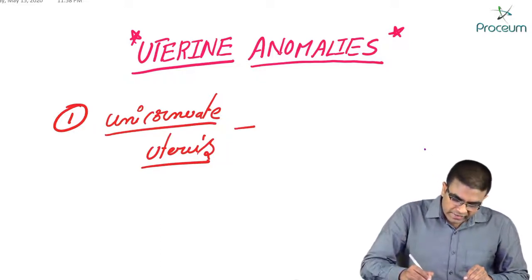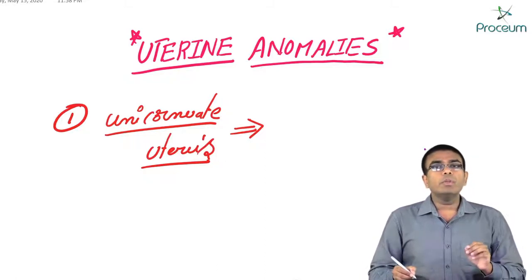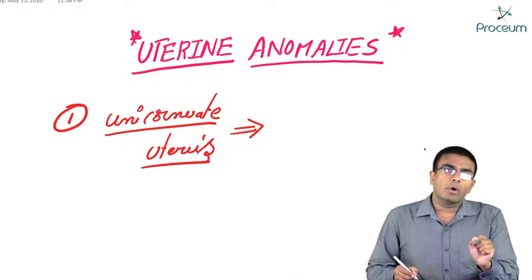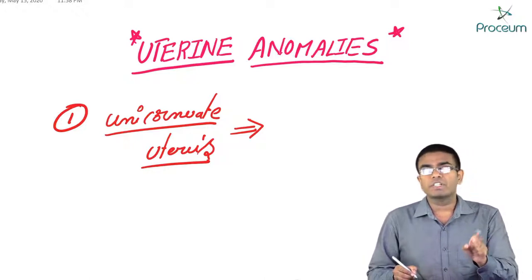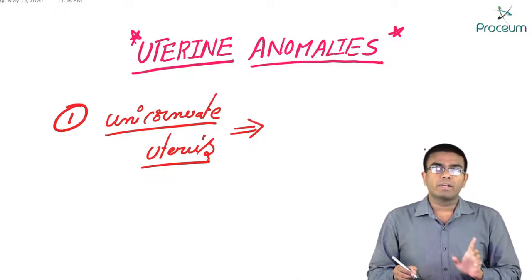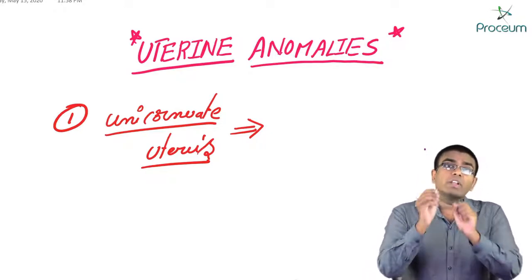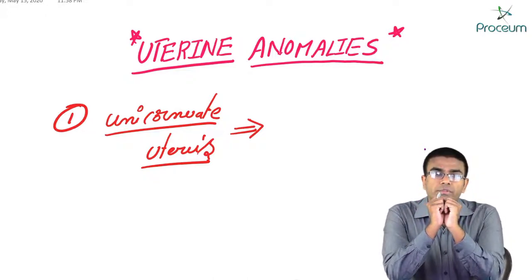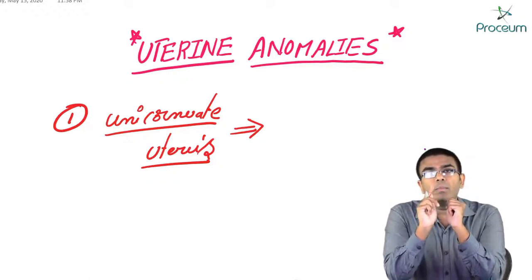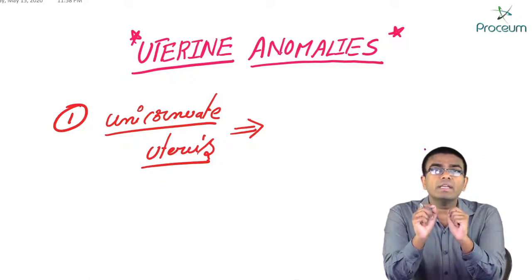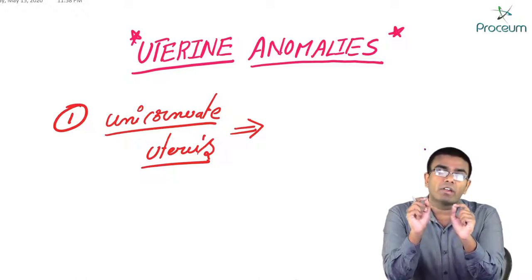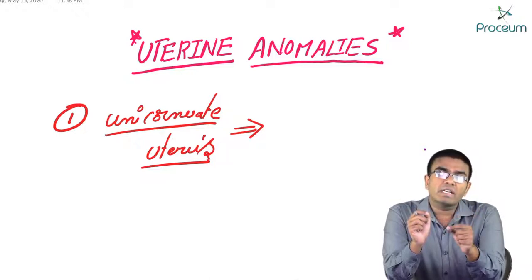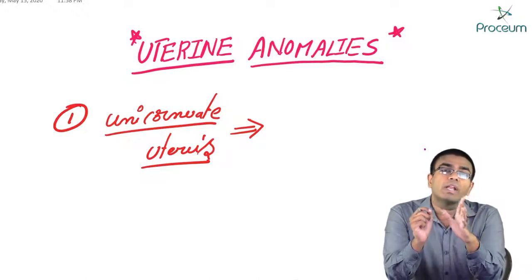The first anomaly is unicornuate uterus. Unicornuate uterus is not an abnormality due to improper fusion — it's not a fusion defect. Usually, two Mullerian ducts should fuse to form the uterus, cervix, and vagina, but in this condition one Mullerian duct is totally regressed or not developed. So the uterus, cervix, and vagina have developed from a single Mullerian duct.